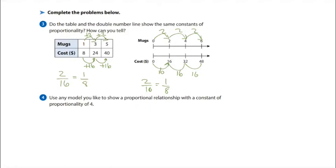The first table gave me 1 mug, 3 mugs, 5 mugs; the second gave me 0, 2, 4, and 6 mugs. Even though they have different numbers of mugs, because for every 2 mugs I go up $16, I still have the same constant of proportionality. Next: use any model to show a proportional relationship with a constant of proportionality of 4.